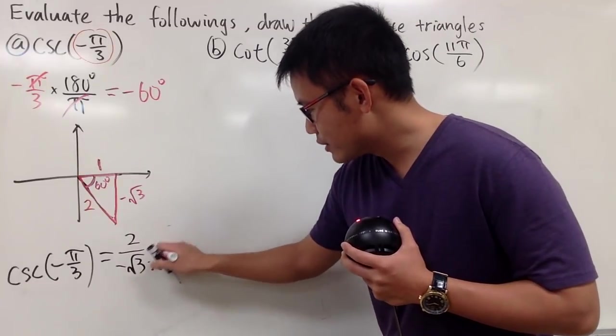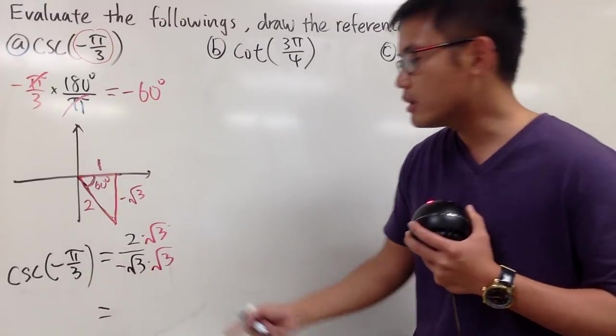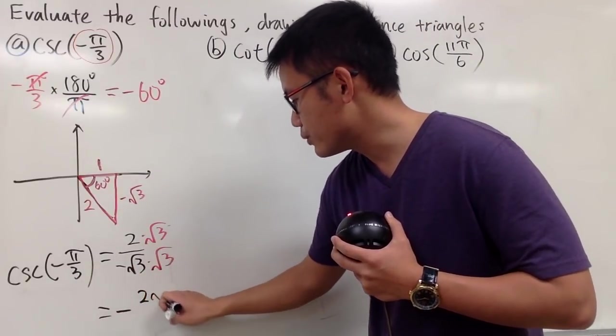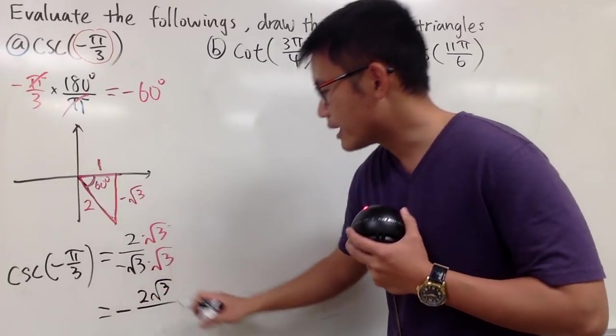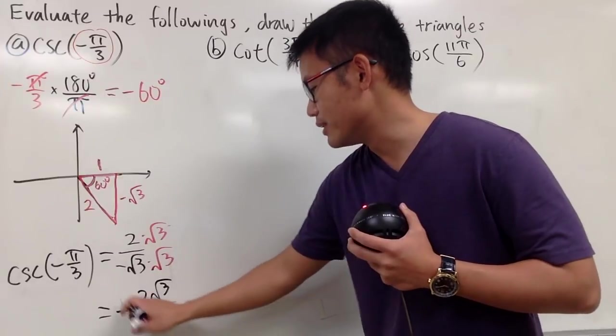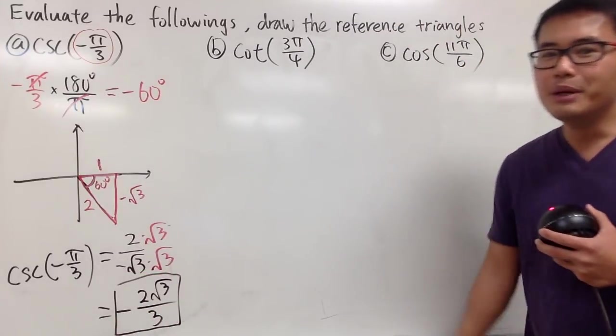Of course, we can just multiply the top and bottom by square root of 3 to rationalize the denominator. Let's put on the negative first, and then on the top is 2 square root of 3. On the bottom, 3 times 3 in the square root gets 3. Square root 3 times square root 3 gets 3.